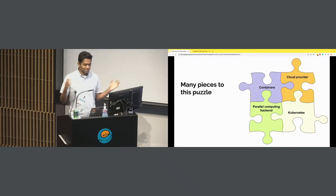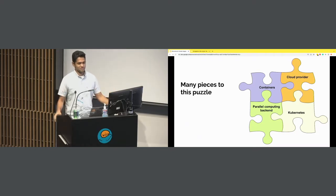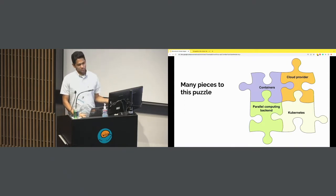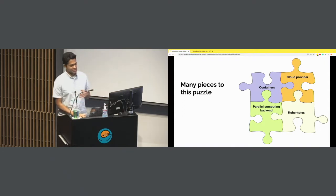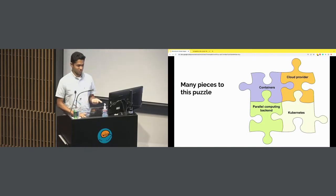There are many pieces to this puzzle. It's not just something you can do with the click of a button. This picture I made shows you the different pieces: we're going to talk about containers, cloud providers, parallel computing backends in R, and we're going to talk about Kubernetes.